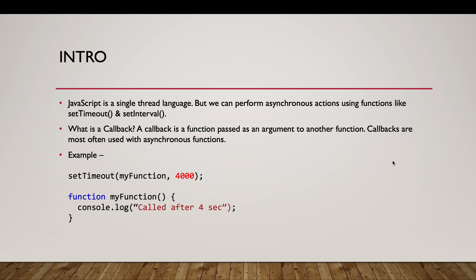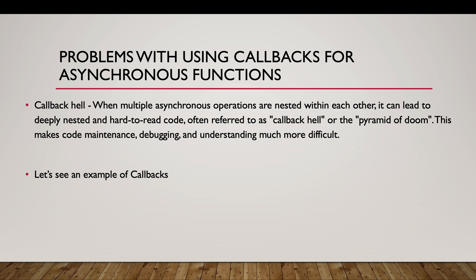A callback is a function that is passed as an argument to another function. Callbacks are most often used with asynchronous functions. For example, using setTimeout, if I want a function to run after four seconds, I provide the function name — that function is essentially a callback.